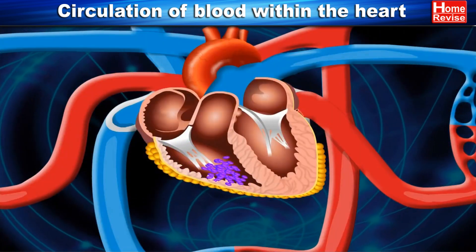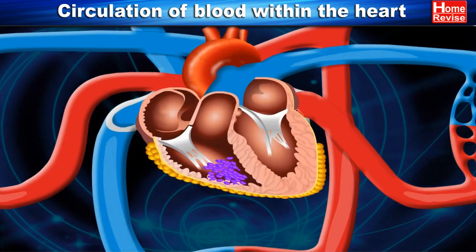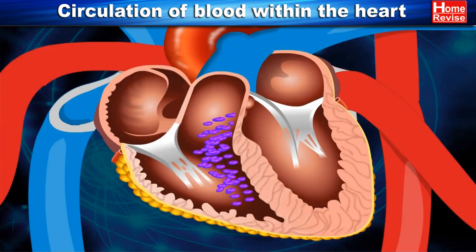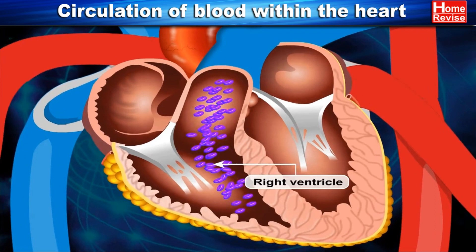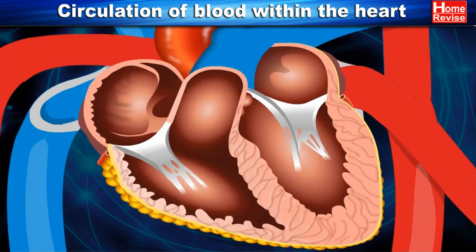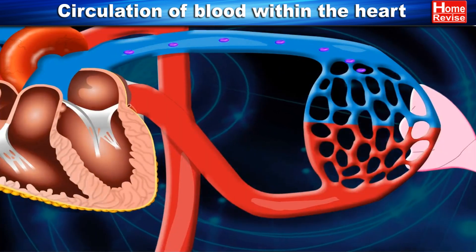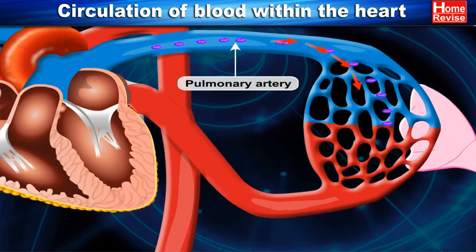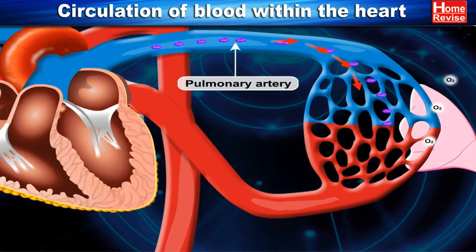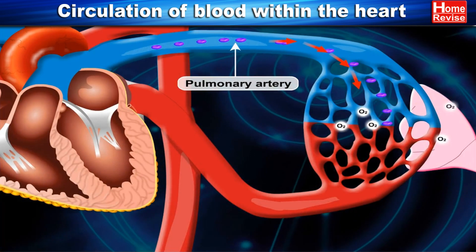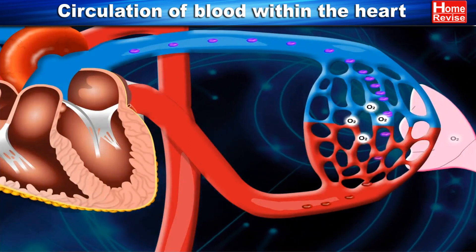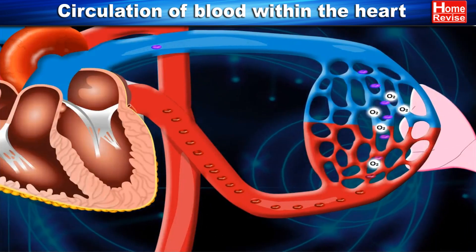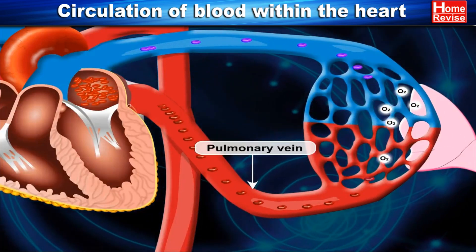The ventricle expands to receive the blood. The deoxygenated blood from the right ventricle is then pumped up into the pulmonary artery and reaches the lungs for oxygenation. This oxygenated blood from the lungs then enters the left atrium through the four pulmonary veins.